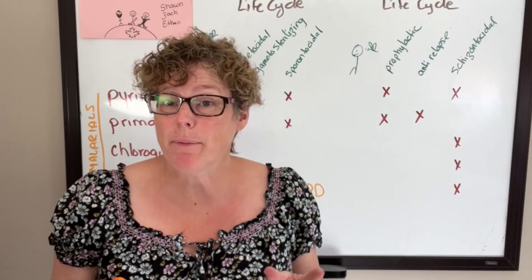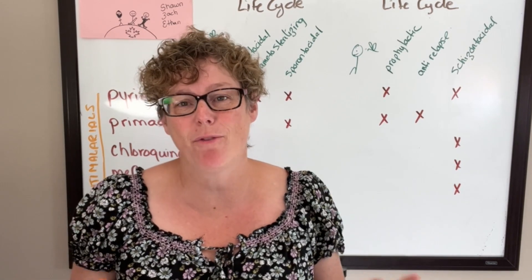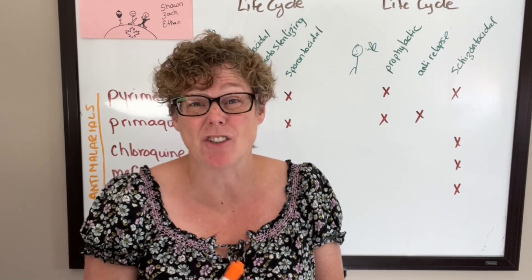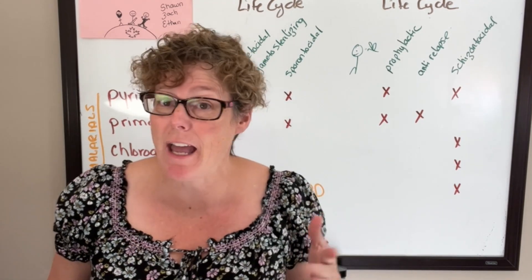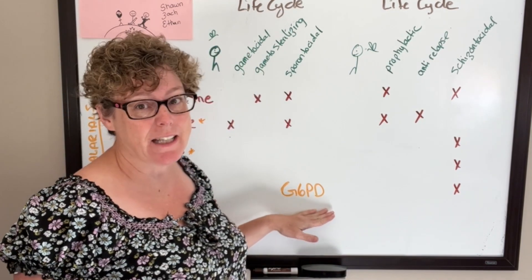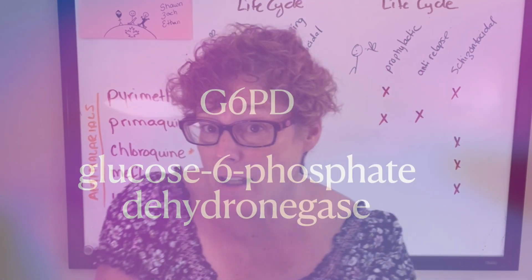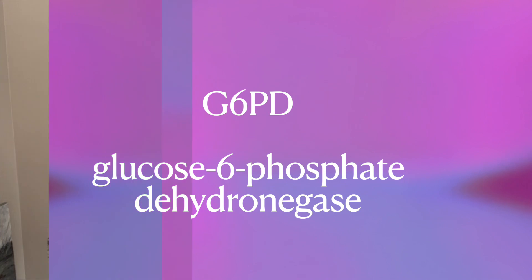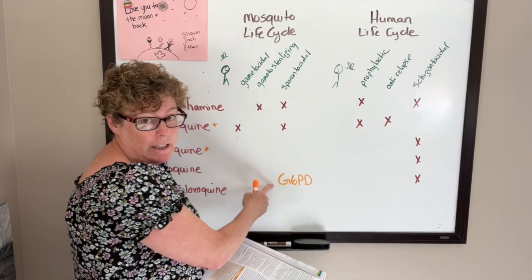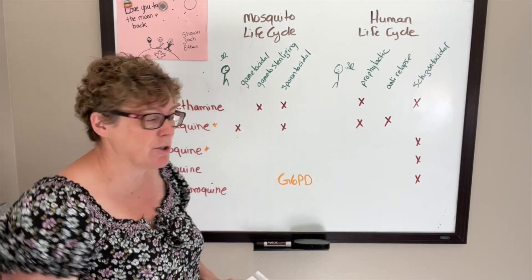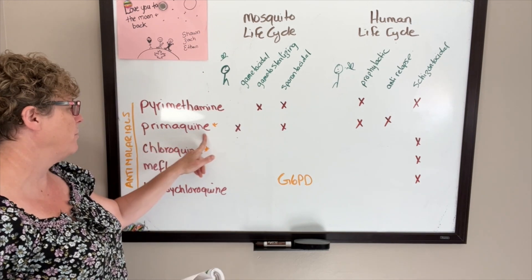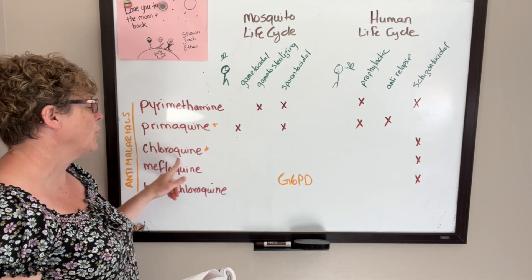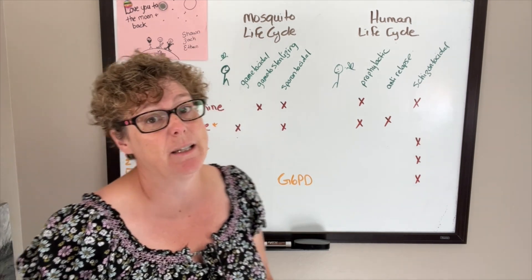There is something critical to know before you are prescribed any of these medications: a blood test to measure your G6PD — glucose-6-phosphate dehydrogenase. If you have a G6PD deficiency, you will not be prescribed primaquine or chloroquine because those can actually cause a hemolytic crisis.